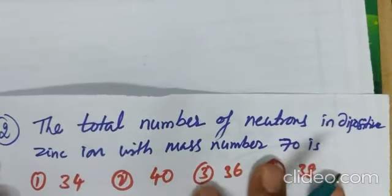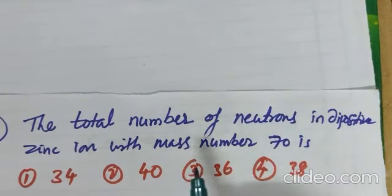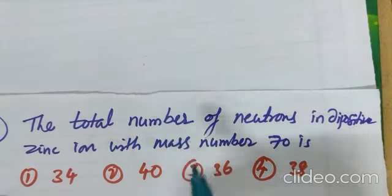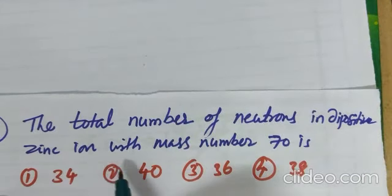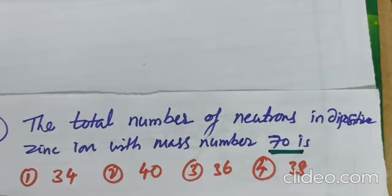Second question. The total number of neutrons in di-positive zinc ion with mass number is 70. In this question, very clearly given, mass number is given. And, asking number of neutrons. Everyone having idea, to calculate number of neutrons. Mass number minus atomic number.